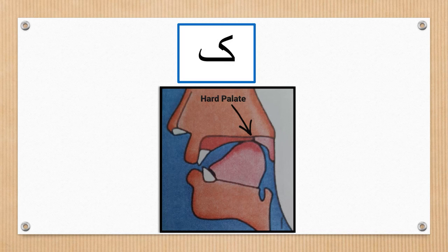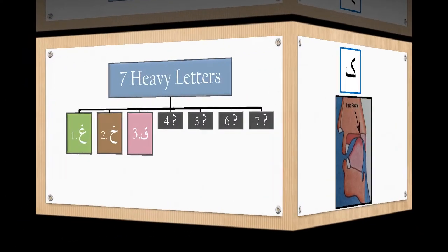You can easily identify what is the soft palate and what is the hard palate by rubbing your tongue around that area. In the last lesson, we learned there are seven heavy letters. We have learned that ghayn is a heavy letter, kha is a heavy letter, and from today's lesson, qaf is a heavy letter. Can you guess what could be the remaining four heavy letters? If you know or would like to take a guess, please mention it in the comments — I would love to read it.